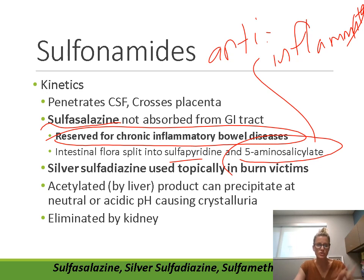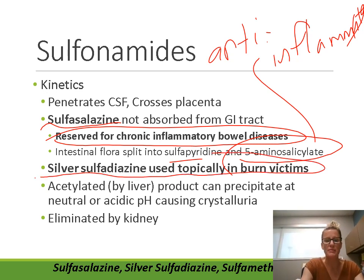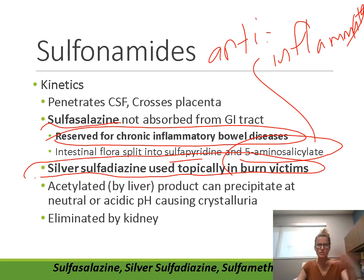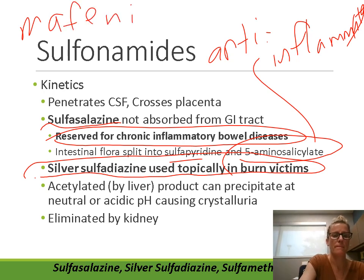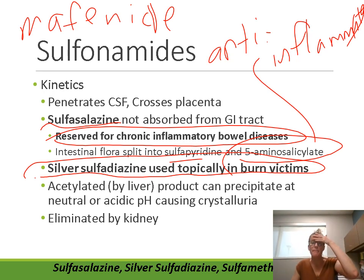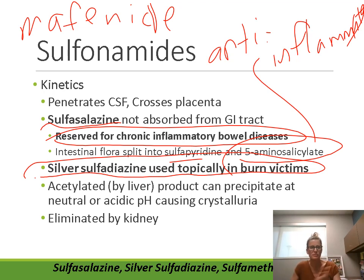Silver sulfadiazine (SSD cream) is used topically in burn victims to prevent burn-related sepsis — one of the few topical sulfonamide applications. Another topical sulfa cream for burns is mafenide, but mafenide is painful when applied and can be absorbed more extensively, disrupting acid-base balance. Comparing the two, SSD cream is generally preferable.